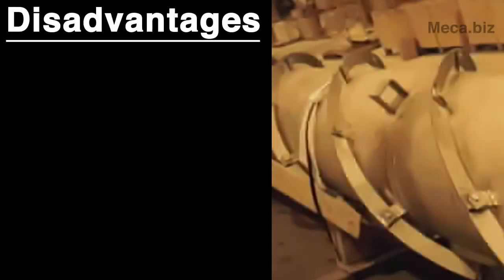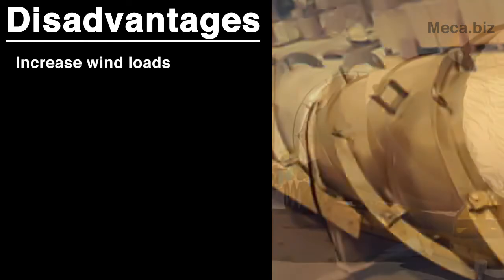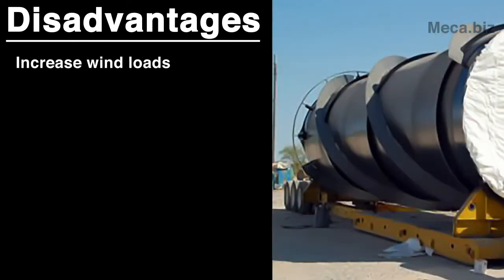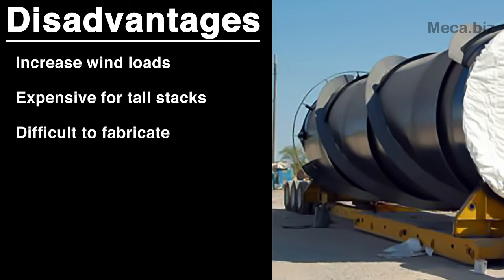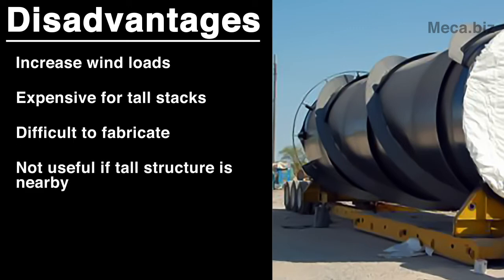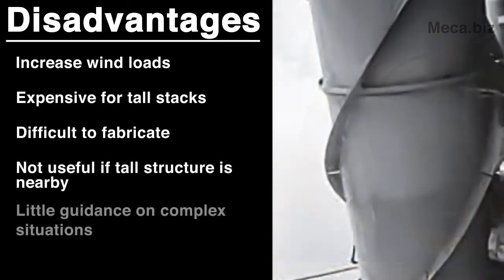There are also several disadvantages to using helical strakes. The biggest is that they increase the wind load on the stack significantly, which can make the stack more expensive, especially for tall stacks. They are also very difficult to fabricate, they are not useful when there is another tall structure nearby due to interference effects, and the codes provide little guidance on what to do with complex situations.